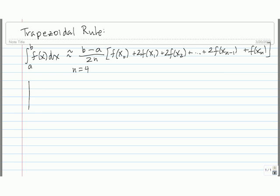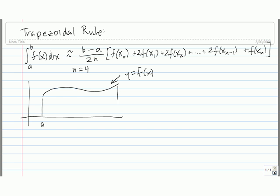Suppose we have a curve y equals f of x, from a to b. This is the x-axis, this is the y-axis. What we do is approximate the integral from a to b of f of x dx, which is actually equal to the area of this region here.